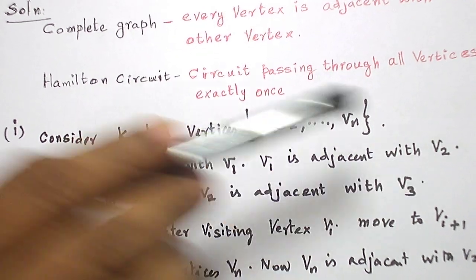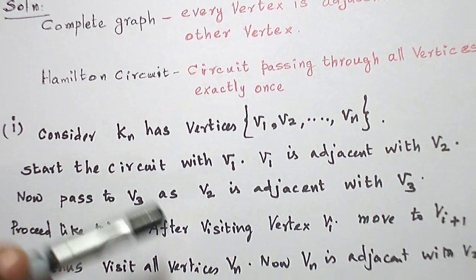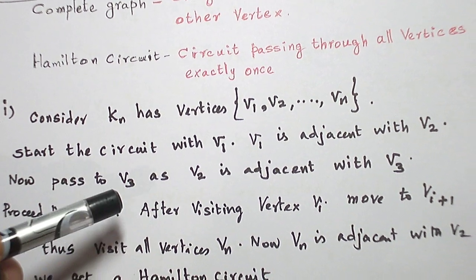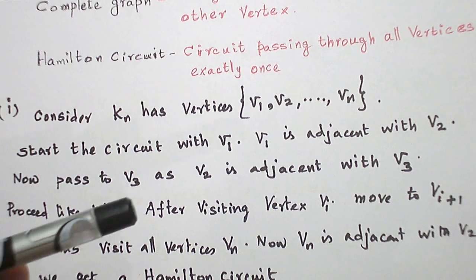Now after visiting V2, go to V3. Since it is a complete graph, there is an edge connecting V2 and V3. So pass through the edge V2, V3. So V3 is visited.